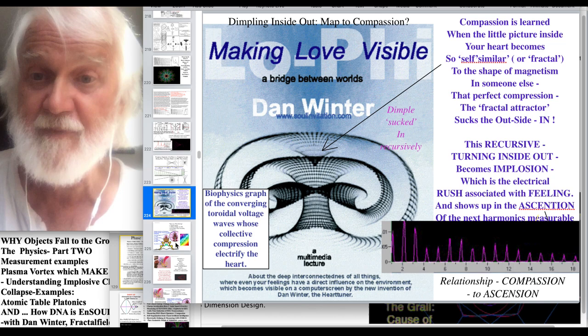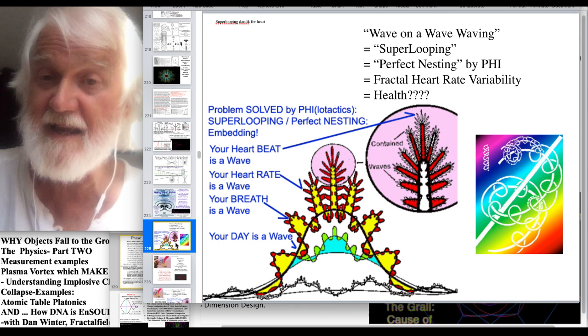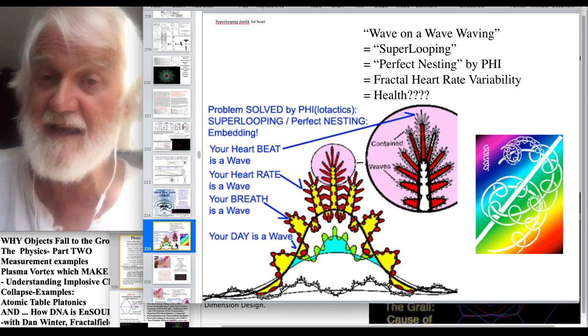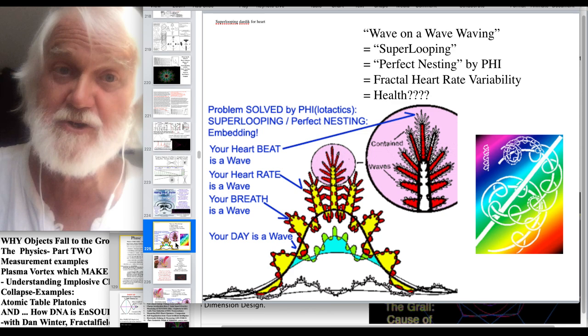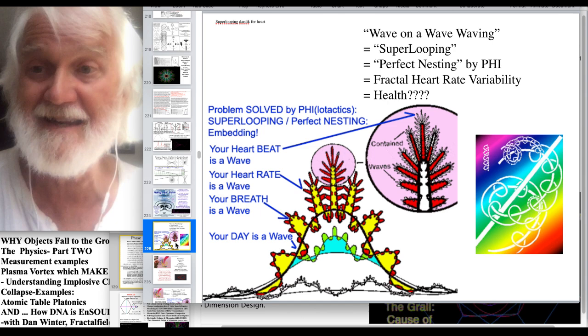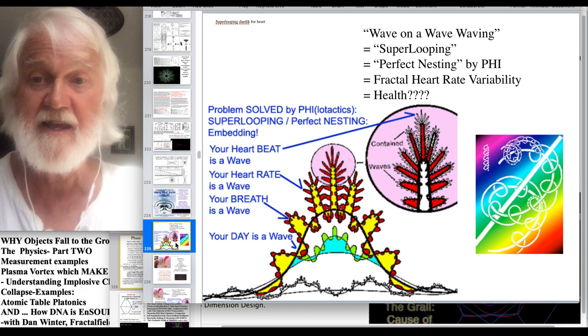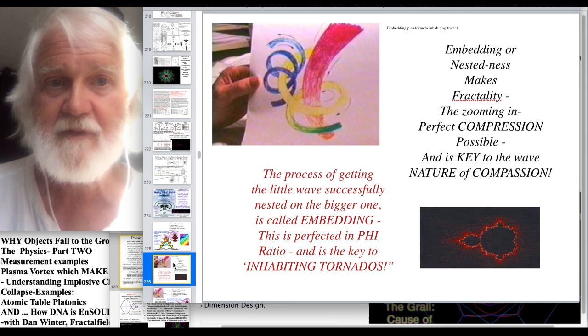which has been used medically to describe how your heartbeat as a wave has to fit into your heart weight as a wave, has to fit into heart breath as a wave, has to fit into your day as a wave, and that embeddability, or super looping, or perfect nesting, which is harmonic inclusiveness and heart rate variability, and medically defines immune health, measure harmonic inclusiveness and heart rate variability, and you got your first human immune system health measurement, Irving Dardick's famous book, Making Waves, who was a good friend.